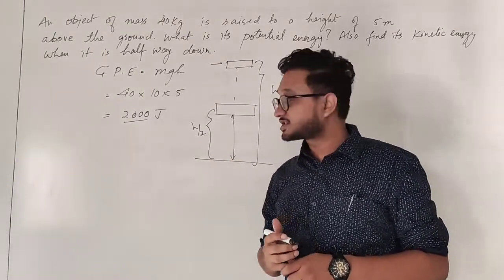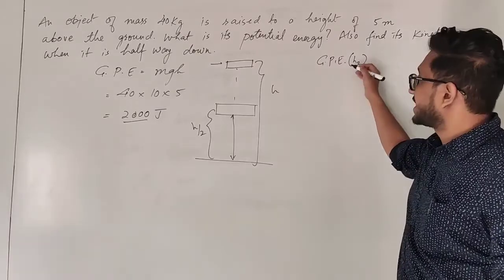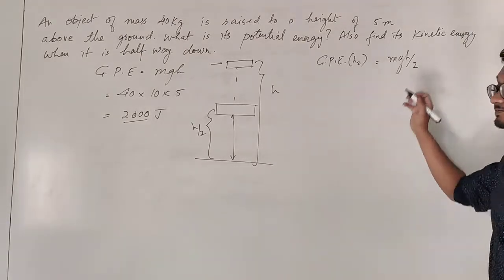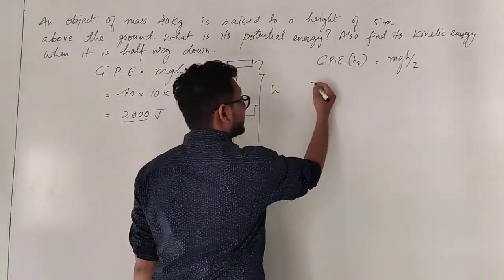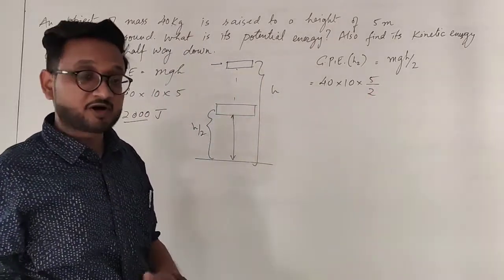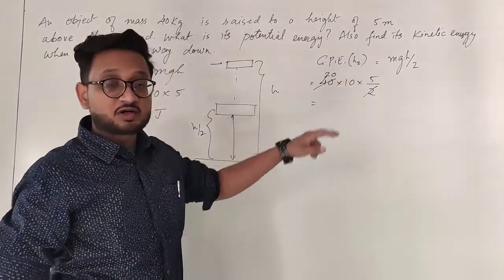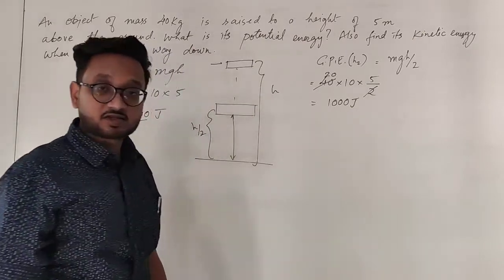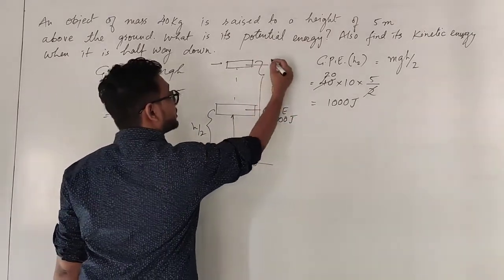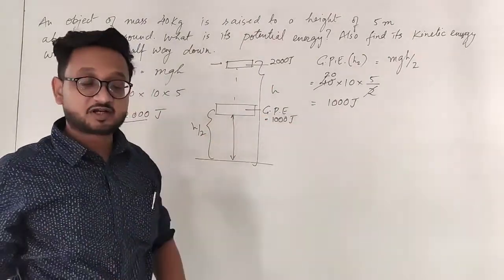So we find the gravitational potential energy for the new height h/2. This is given by mg×(h/2). Mass is 40, acceleration is 10, and height is 5/2 = 2.5. So it becomes 40 into 10 is 400 — wait, 20 into 10 is 200, and 200 into 5 is 1000. So the new potential energy is 1000 joules. Previously it was 2000 joules, so energy has been reduced, and whatever energy has been reduced has been converted into kinetic energy.